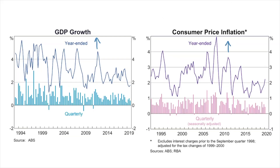One example would be when Australia was experiencing the second mining boom in the early 2010s. The boom caused an increase in incomes and spending in Australia, and saw inflation go from the GFC low of 1.7% in 2009 to a peak of 3.3% in 2011.